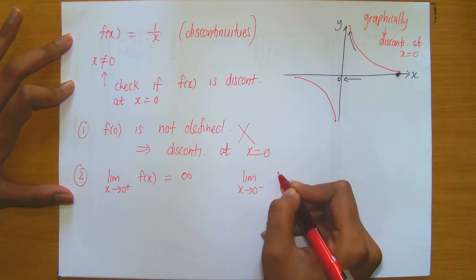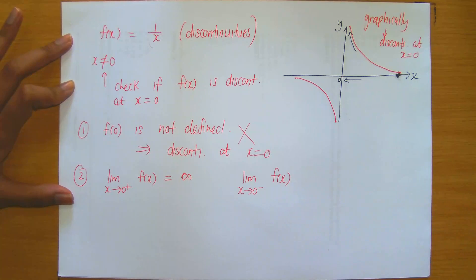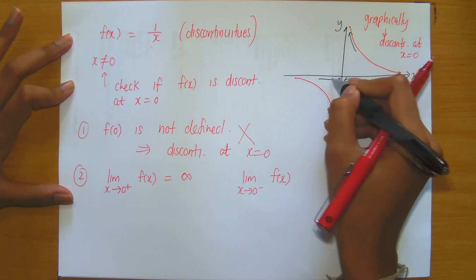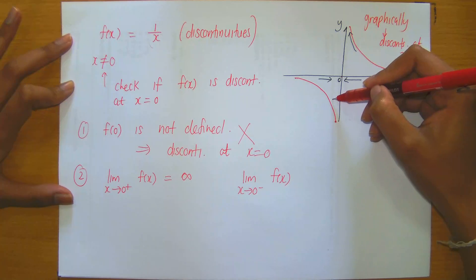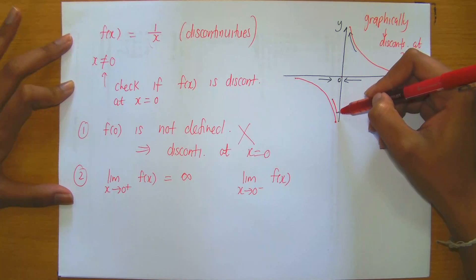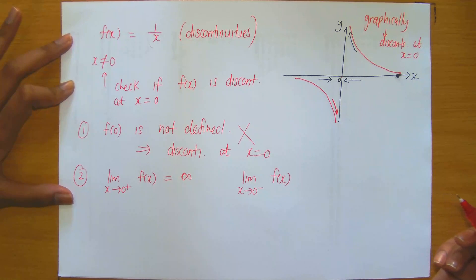And what's happening as x approaches 0 from the left of f(x)? Then, that means I'm now moving in that direction. Observe that the values of f(x) get larger and larger, but in the negative way.